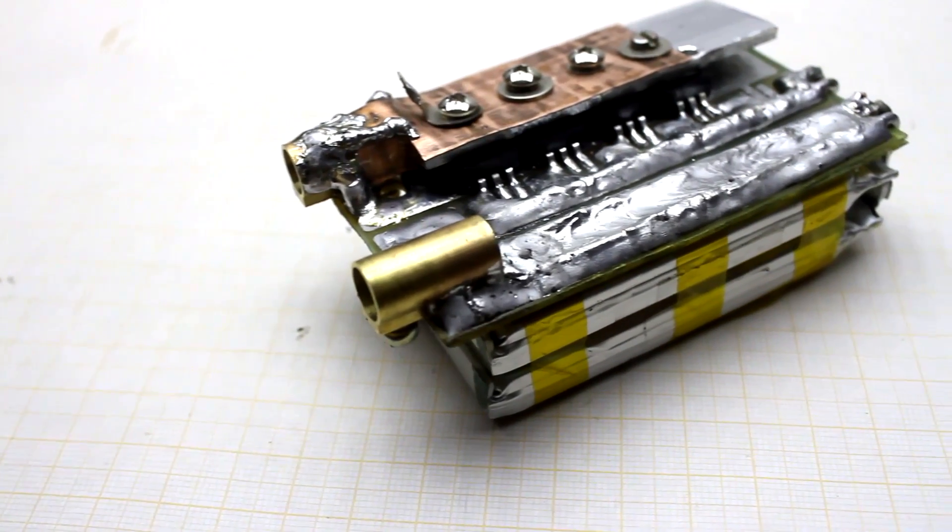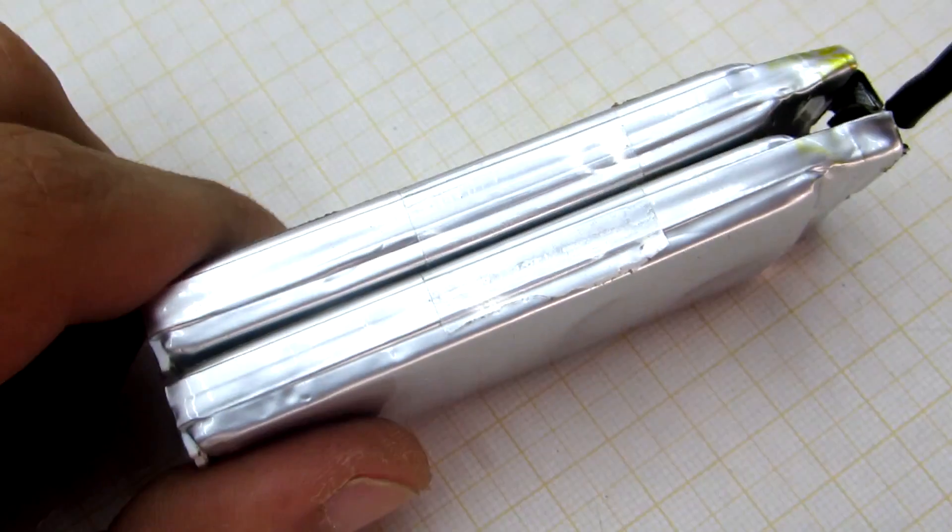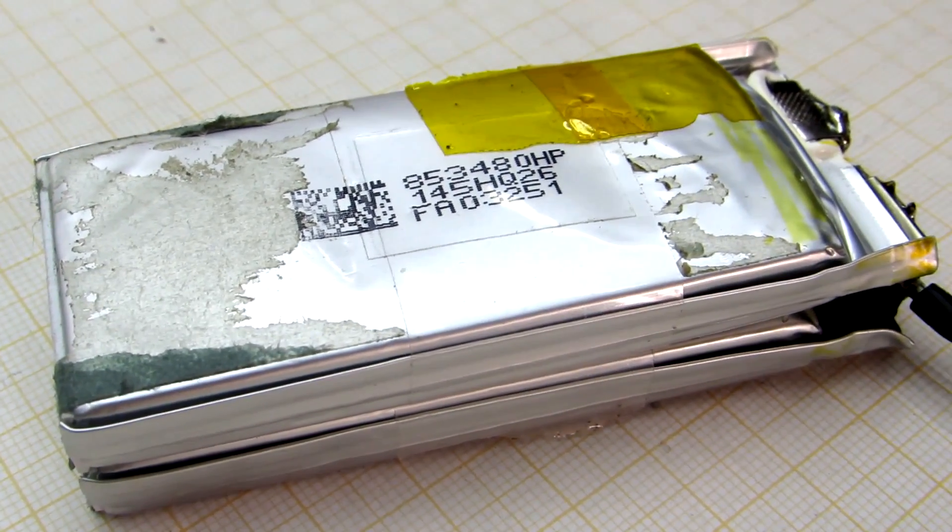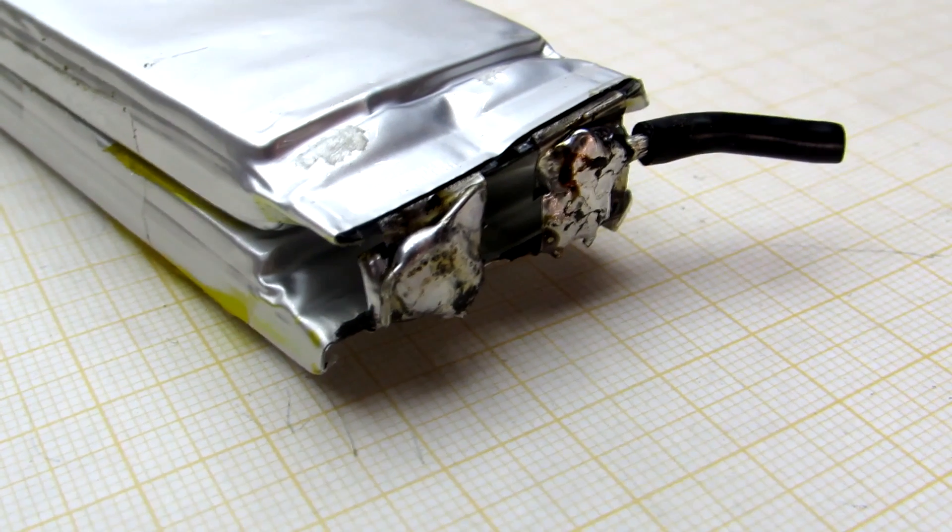The third version almost doesn't differ from the second one, except that the ionisters have been replaced with batteries. Here used lithium polymer accumulators with high current output. Now let's go to the project.